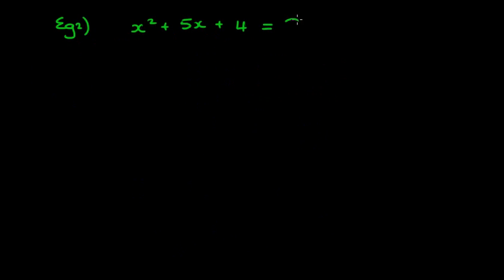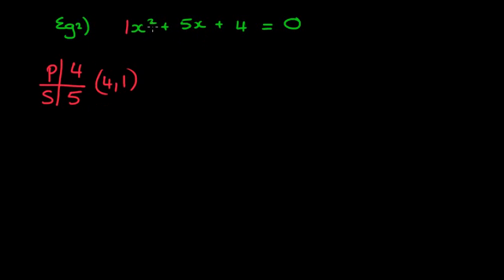Next question: x squared plus 5x plus 4 equals 0. Back to factorising quadratics. First step — is there a common factor? No. Second step — difference of two squares? No, there are three terms. So it's a quadratic trinomial. The product is 1 times 4 equals 4, the sum is 5. Two numbers that multiply to 4 and add to 5 are 4 and 1. So we get x plus 4 times x plus 1. Previously that was our factorised answer, but now we have an equation because of the equals 0.